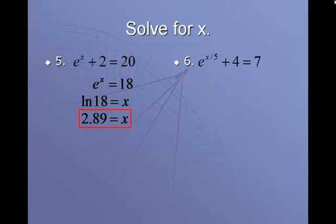On number 6, we start by subtracting 4 from 7 to get 3. Now, we have an e in the problem, so you're going to use natural log to get rid of it. Natural log of 3 equals x over 5. Natural log of 3 can be evaluated in your calculator. It's 1.1. Multiply by 5 to get 5.5 for a final answer.